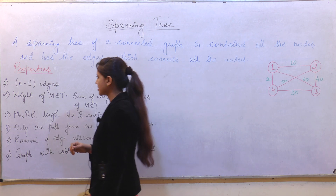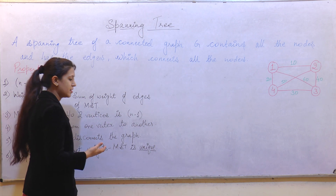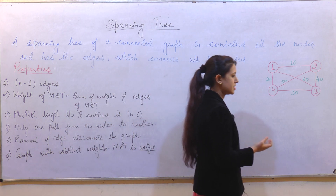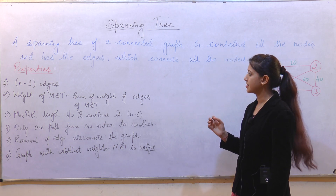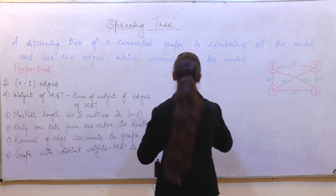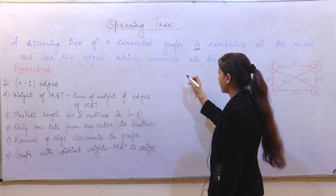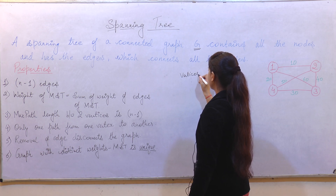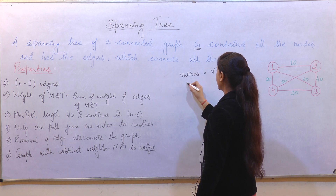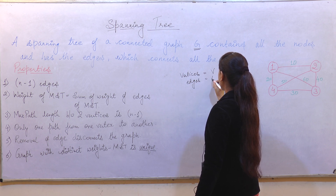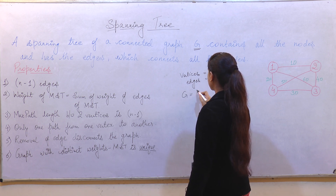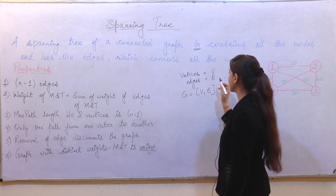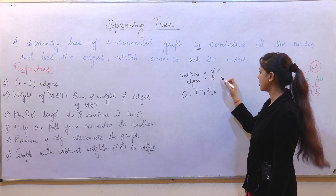A spanning tree is a connected graph which contains a set of vertices and edges, and those edges are mainly used to connect the vertices. We represent a graph with capital G, vertices with capital V, and edges with capital E. The basic definition of graph G is (V, E), where V denotes the set of vertices and E denotes the set of edges.